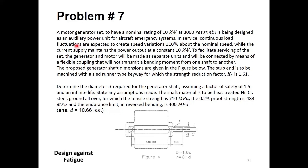In service, continuous load fluctuations are expected to create speed variations of plus or minus 10% about the nominal speed. The speed will fluctuate around the nominal value by plus or minus 10%, and it can go up or down by 10%, while the current supply maintains the power output at a constant value of 10 kilowatts at all times.